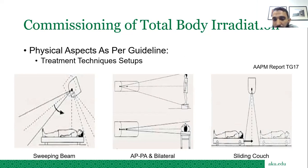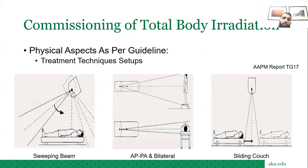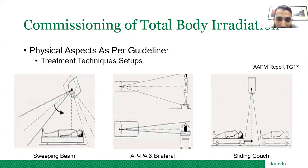In the AP/PA technique, the patient stands in front of the beam — half the treatment is delivered via the AP side and half via the PA side. In the bilateral technique, half the dose is delivered from one side, then the patient is rotated 180 degrees and half the treatment is delivered from the other side. In the sliding couch technique, the beam is static while the patient on the couch slides through the bunker receiving the complete dose. The most dominant techniques used are AP/PA and bilateral.